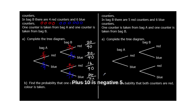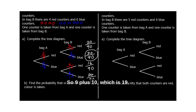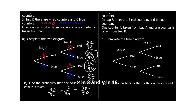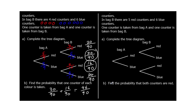So what was the question? Find the probability that one counter of each colour is taken. So it's either red then blue, or blue then red. So it's 30 out of 90 plus 16 out of 90, which gives 46 out of 90. We don't have to simplify it unless we're asked to. So I'm going to leave it as 46 out of 90.